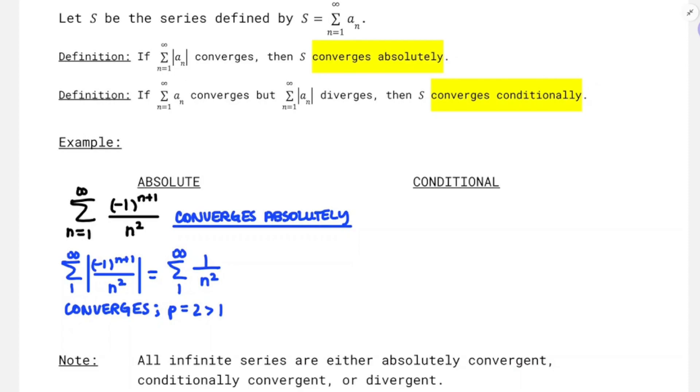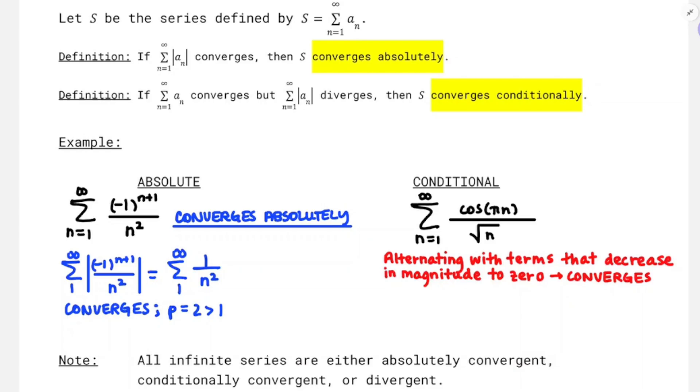And for an example for conditional convergence, I'd draw up a very similar one, the sum from 1 to infinity of cosine of pi n, that's going to cause it to alternate, divided by the square root of n. So I'm going to be thinking about a p series again. Now this series is alternating with terms that decrease in magnitude to zero. I showed you that in the last video, that's why I went with this one. This is different from the alternating harmonic, but we're already somewhat familiar with it. And that means that the series converges by the alternating series test. But if I think about the absolute value of the terms and adding them up, the sum of the absolute value of the terms, that's just going to be the sum from 1 to infinity of 1 over the square root of n. And that one's going to diverge. Same idea, p series test, p is a half, which is less than 1. So if I took the absolute value of the terms and that series diverged, but the original series converged, that's what it means to converge conditionally.